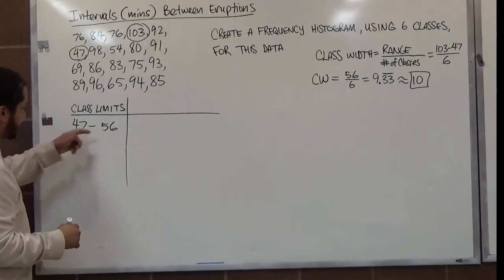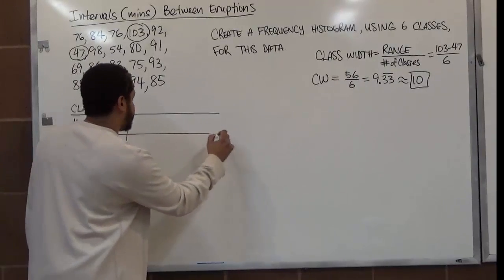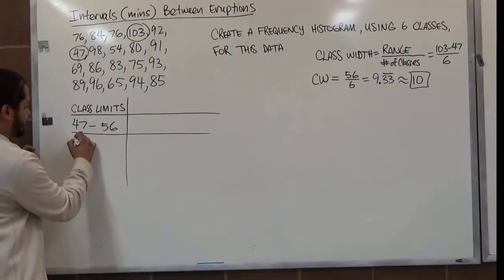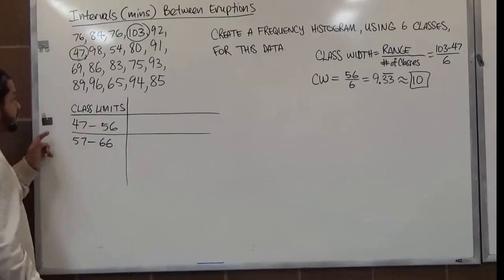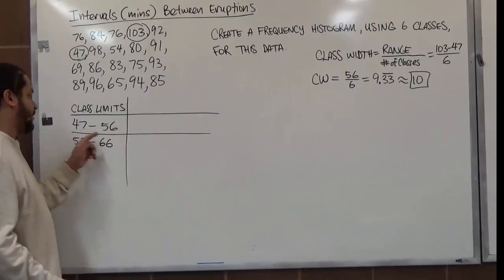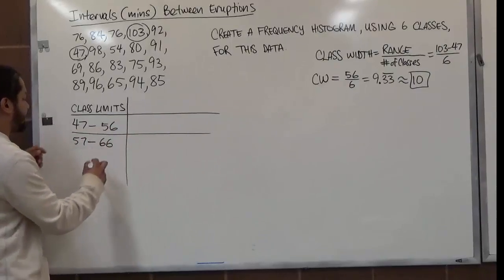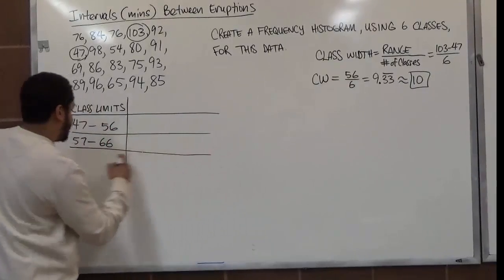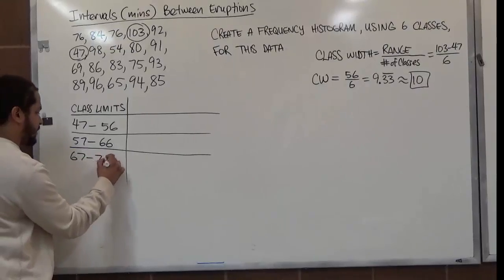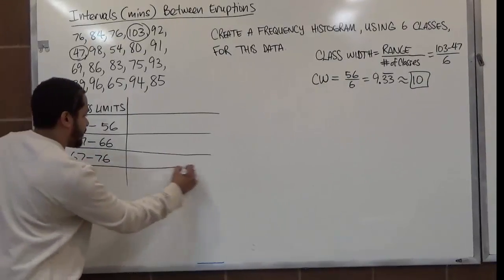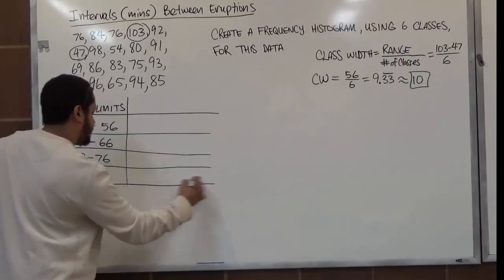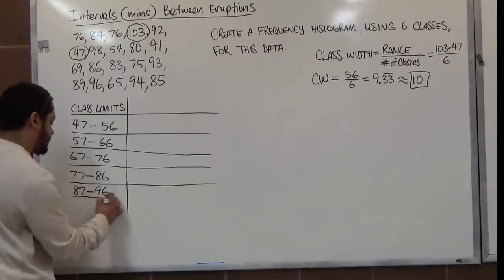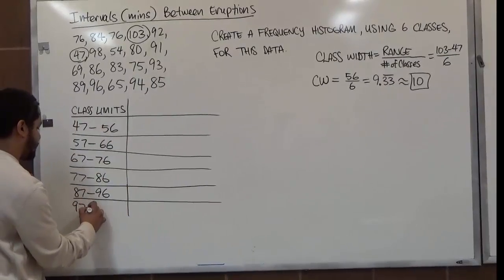For every class going down from this first one, we just add ten to each side. Ten plus forty-seven gives us fifty-seven, and fifty-six plus ten gives us sixty-six. So after fifty-seven to sixty-six, we get sixty-seven to seventy-six, then seventy-seven to eighty-six, then eighty-seven to ninety-six, and lastly ninety-seven to a hundred and six.